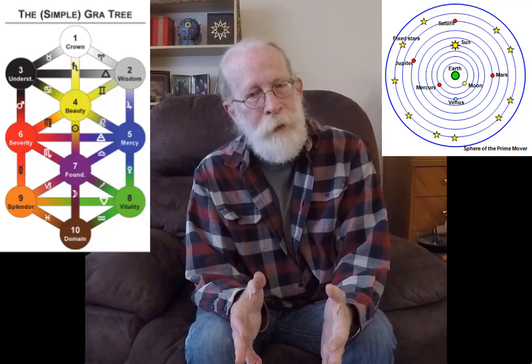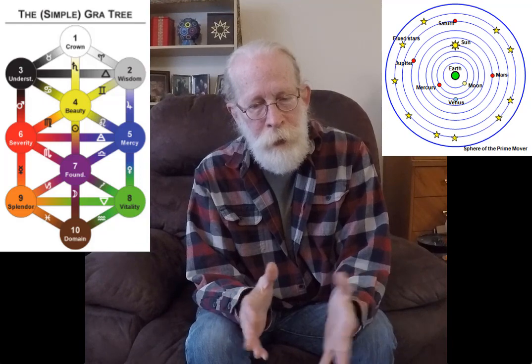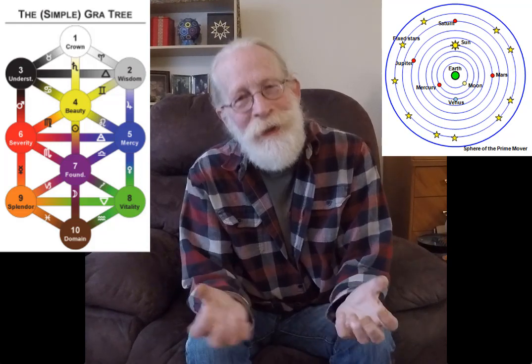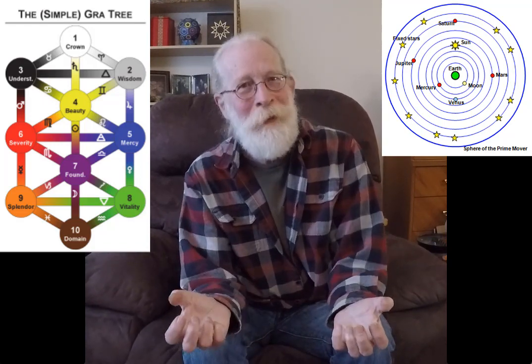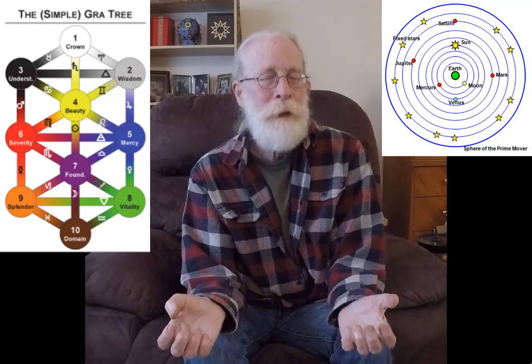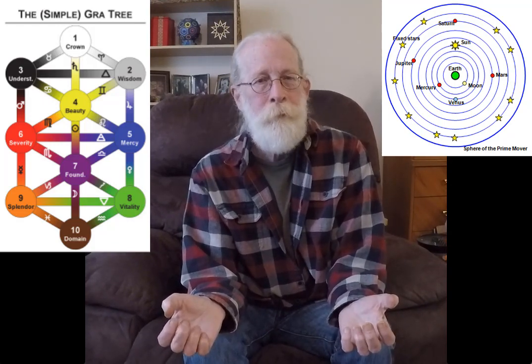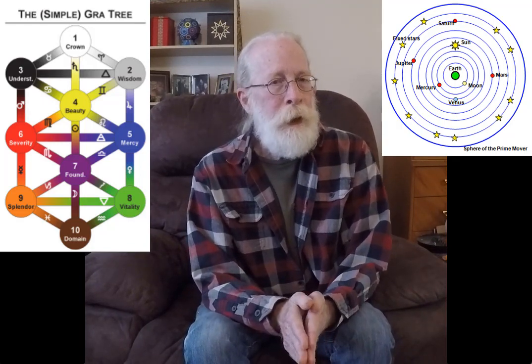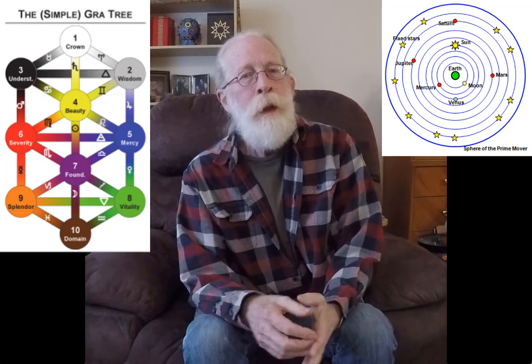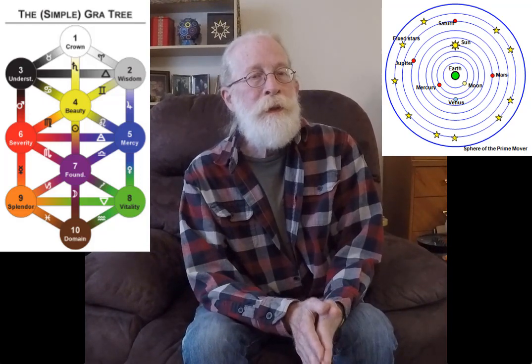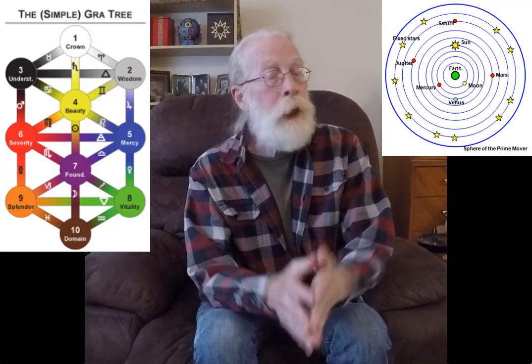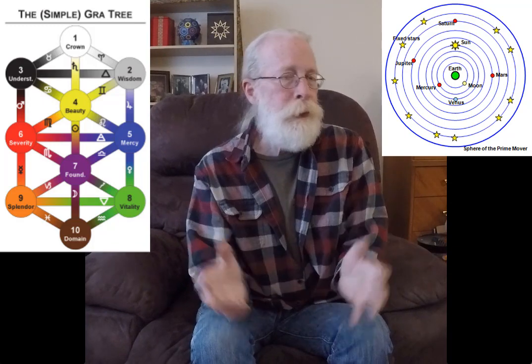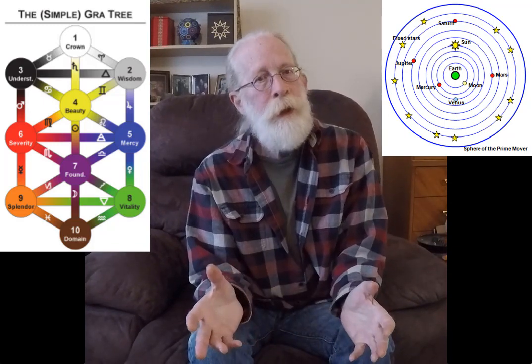It's important to be able to know where the symbols you are using come from. And in the Hebrew Kabbalah, the planets are not associated with the Sephirot. So that means the colors we use in the Tree of Life have nothing to do with the ancient Hebrew Kabbalah. They are a modern invention. They are our addition to this symbol.